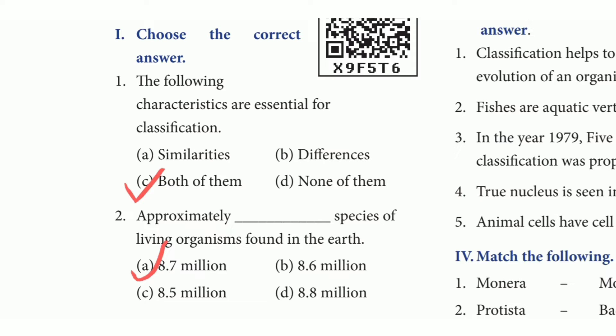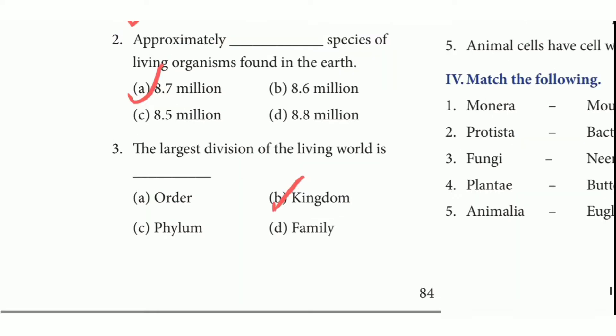Second question: approximately how many species of living organisms are found on Earth? The answer is option A, 8.7 million. Third question: the largest division of the living world is blank. The answer is option B, kingdom.